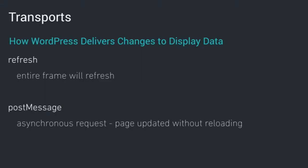One interesting and relatively new change is the way the customizer refreshes data. There are two methods: the default is 'refresh,' where the entire frame is refreshed — like loading a new web page, taking the time to load all data into your browser. The second is 'post message,' which is more modern — an asynchronous request that refreshes only the data that has been changed. You can see that as you type in a field, the text changes instantly.